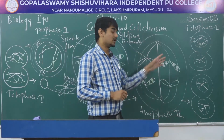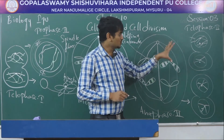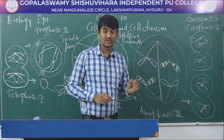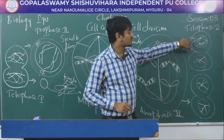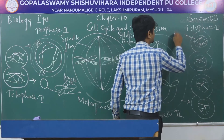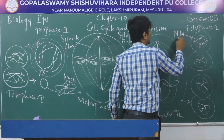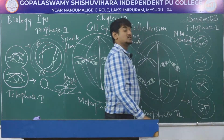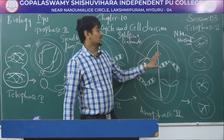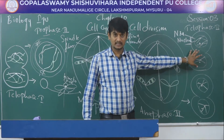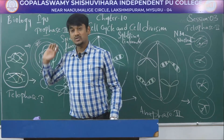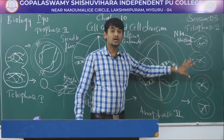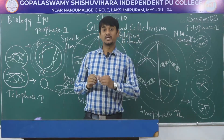The next stage is telophase 2. The two groups of chromosomes again get uncoiled and become a thread-like structure. The nuclear membrane and nucleoli reappear, and spindle fibres disappear. Finally, after cytokinesis, two daughter cells are formed, and each daughter cell undergoes meiosis to produce four haploid cells.